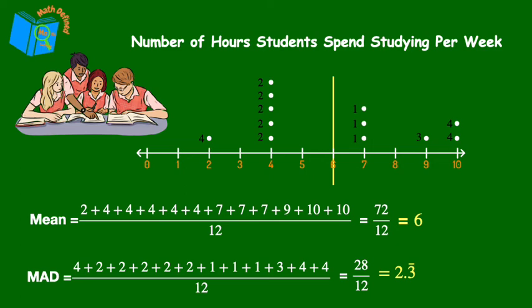And if I draw a line here on the right, about 2.3 units away from 6 and another line on the left, 2.3 units away from 6, you can actually see this average distance to see that the data points for this survey are pretty spread out.